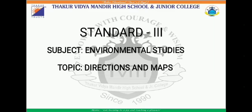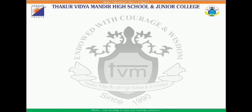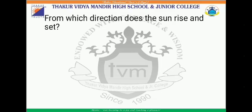My dear students, I have a question for you. From which direction does the sun rise and set? As we have observed, the sun rises from one direction and sets in the opposite direction. That is, the sun rises from the east direction and sets in the opposite direction, which is west.